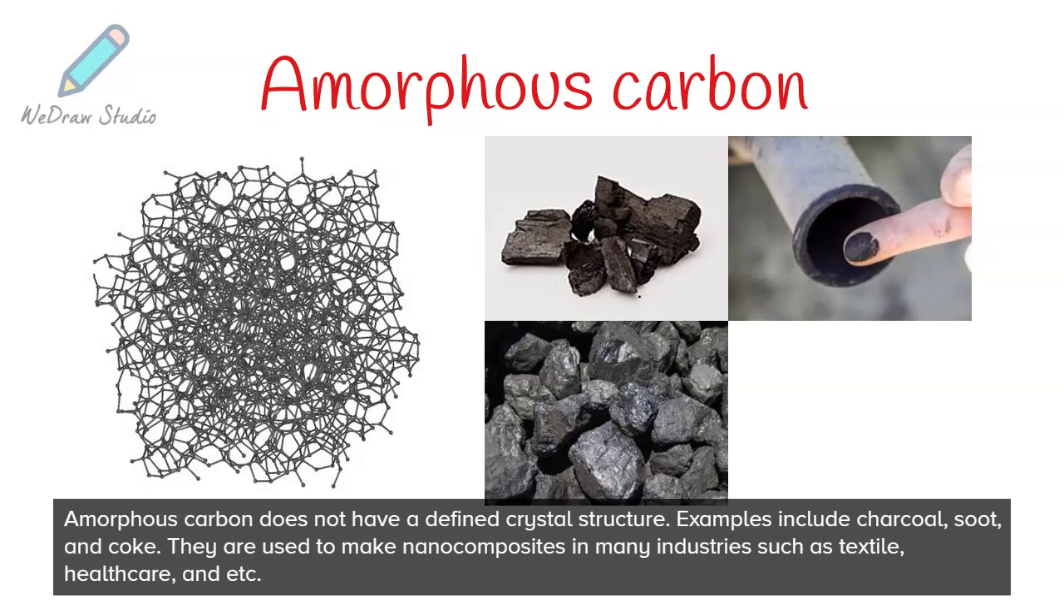Amorphous carbon does not have a defined crystal structure. Examples include charcoal, soot, and coke. They are used to make nanocomposites in many industries such as textile, health care, and etc.